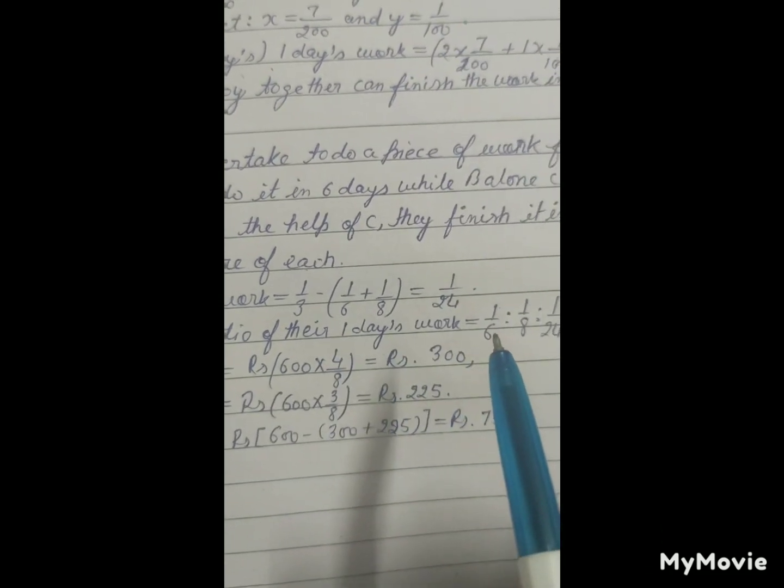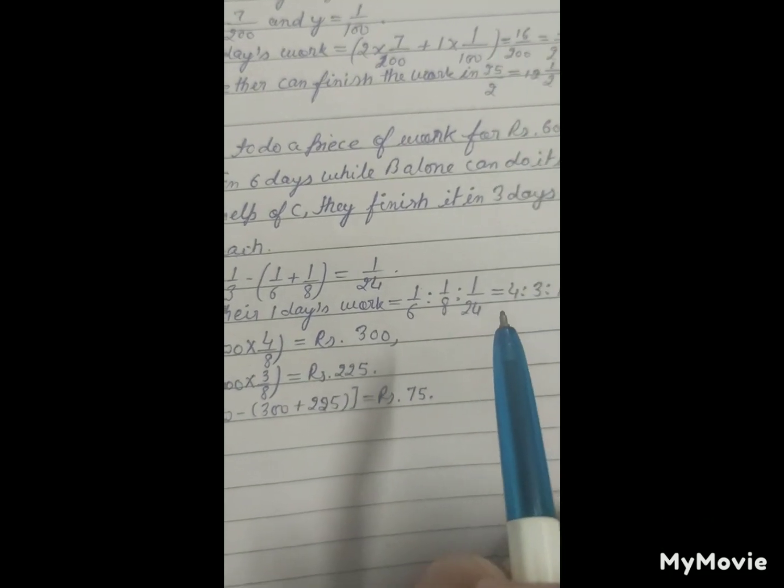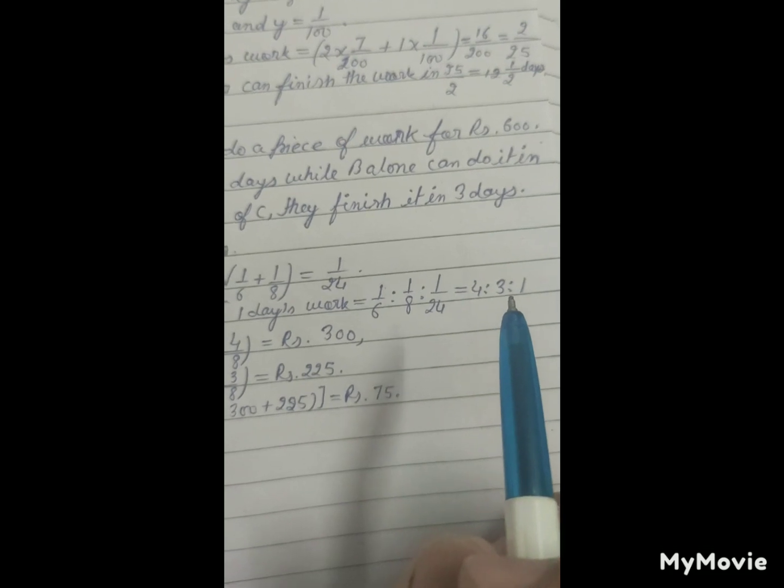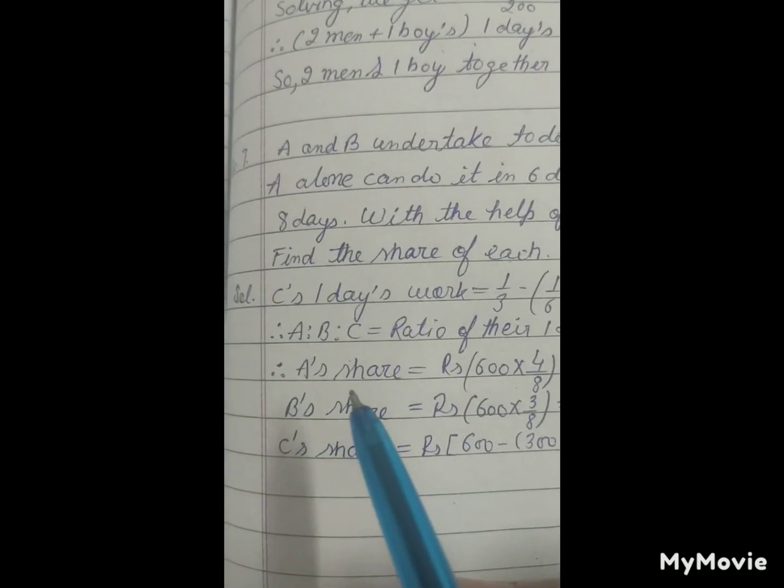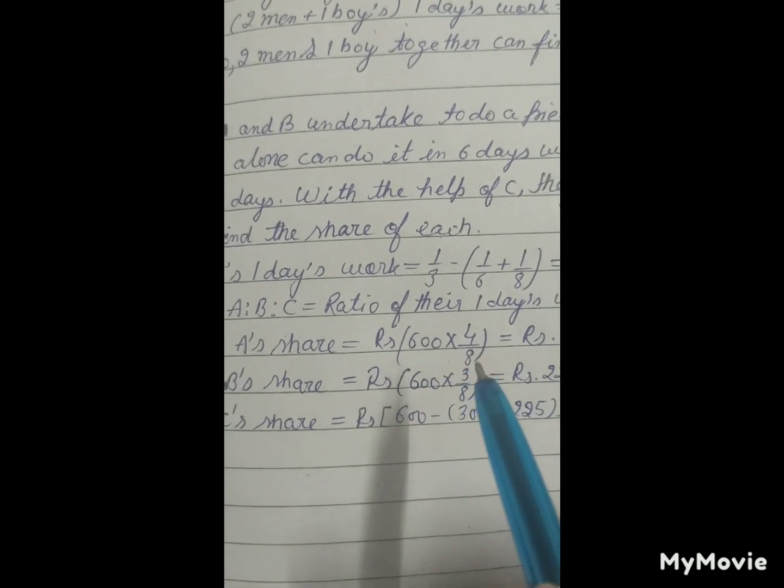their one day's work is equal to 1 upon 6 ratio 1 upon 8 ratio 1 upon 24 equals to 4 is to 3 is to 1. So A's share is equal to Rs. 600 into 4 upon 8